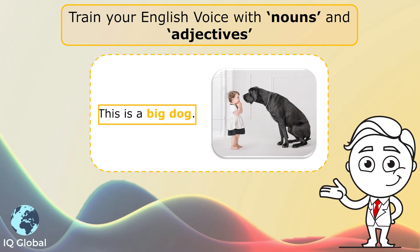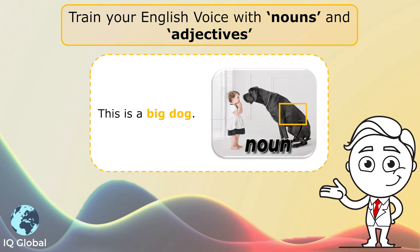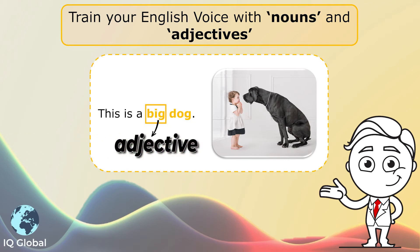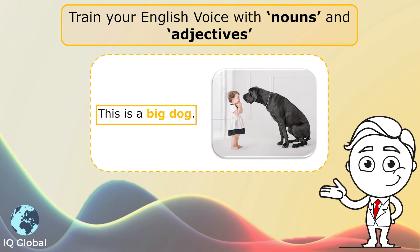This is a big dog. The word dog is the noun — it names something, it names an animal. And the word big is the adjective; it describes that dog, it describes the noun. This is a big dog, and that really is a big dog.